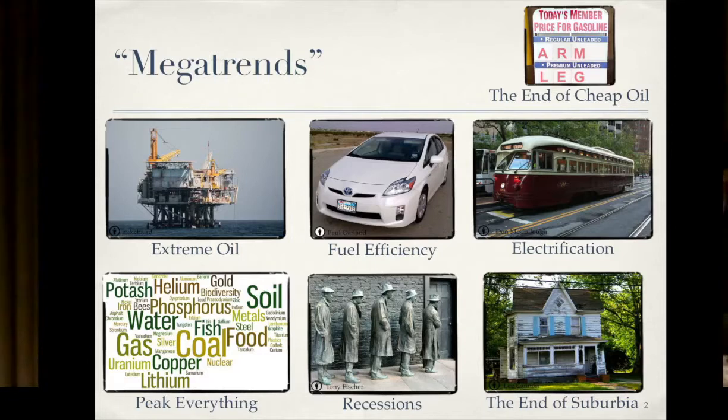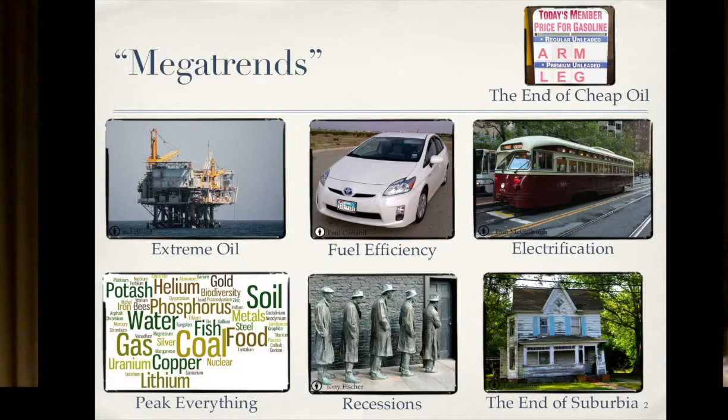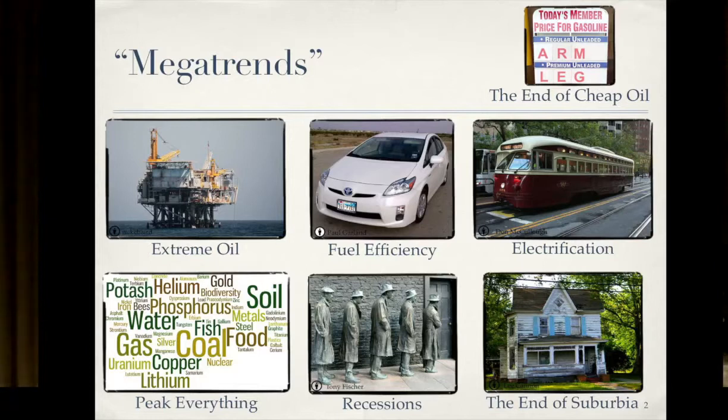Recessions, we already saw what some people have called the first peak oil recession in 2008. Up until today that we're trying to get out of, this could be a regular thing in the future. And then the end of suburbia. We're already seeing this today with housing prices coming back faster in more urban neighborhoods than they are out in suburbia. You can look at Detroit as a great example. The people that can afford it are moving to places that are easier to walk around, easier to get public transport, and that sort of thing.